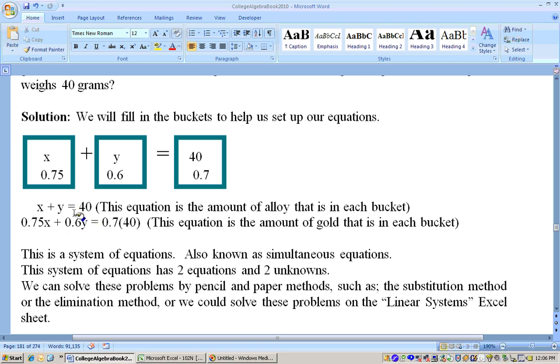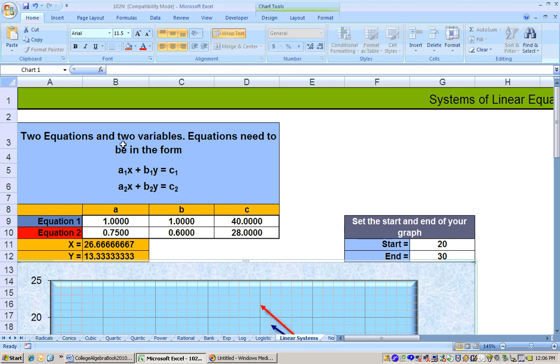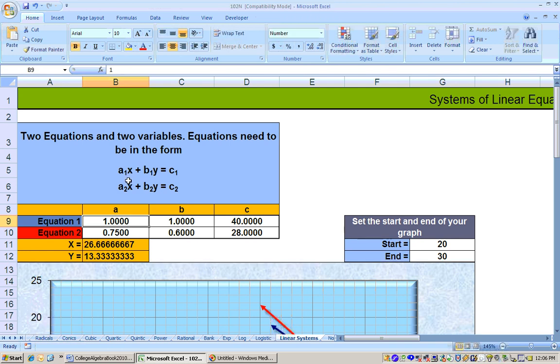But I'm going to go ahead and use Excel to solve this system of equations. And to solve them, you need to get the equation in this standard form right here, where the X's and Y's are on the left-hand side and your numbers are on the right-hand side. So on the Excel sheet, you go to the linear system sheet, and here you can see the format that the equations need to be in, and we need to type in our coefficients. So the first equation was 1X, or just X, so your A1 is 1, plus Y, so your B1 is 1, equals 40. Your second equation was 0.75X, so your A2 is 0.75, plus 0.6Y, equals, it was 0.7 times 40. And if you just type in equals 0.7 times 40, and hit enter, you'll get 28. And as soon as you type that in, you'll get your answers right here, it solves it for you.